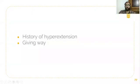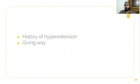In this video we shall discuss about anterior cruciate ligament tear. History of hyperextension of the knee is the main cause for injury of the anterior cruciate ligament. Immediately after the injury there will be giving way of the knee. Knee joint effusion will be faster in ACL tear compared to meniscal tear, and the patient is not able to continue activities after an acute ACL injury.